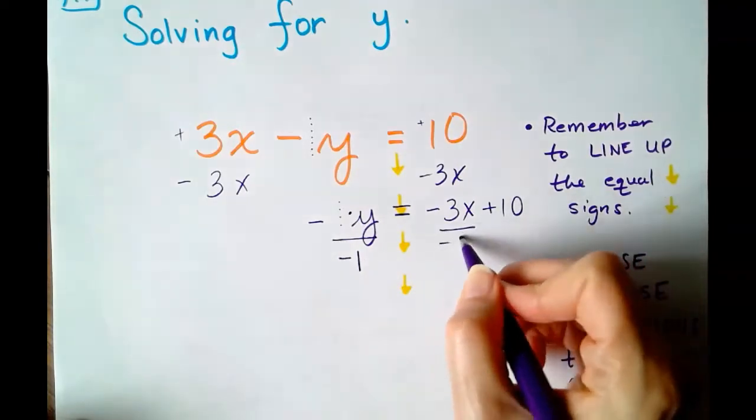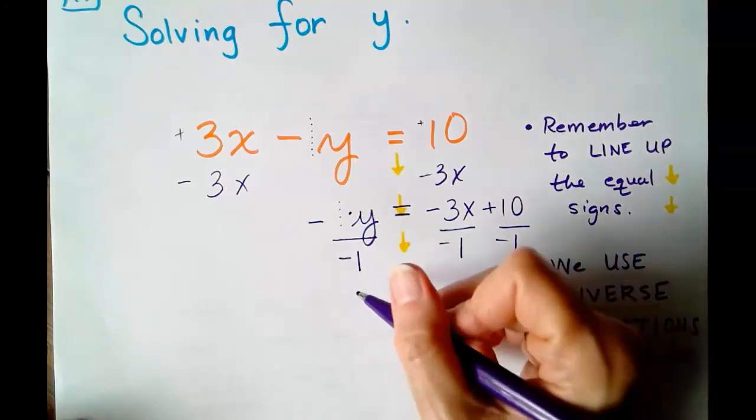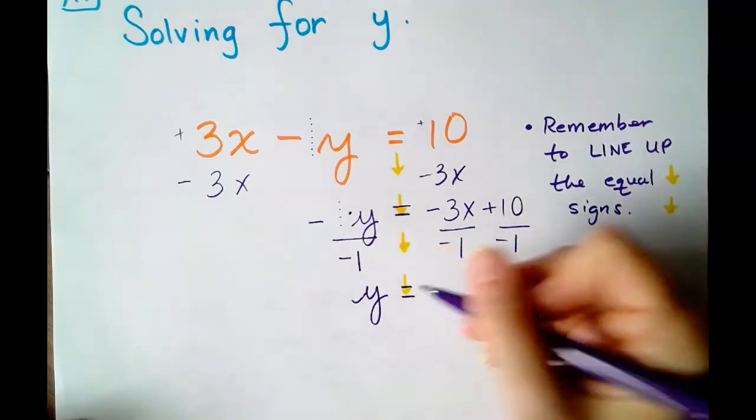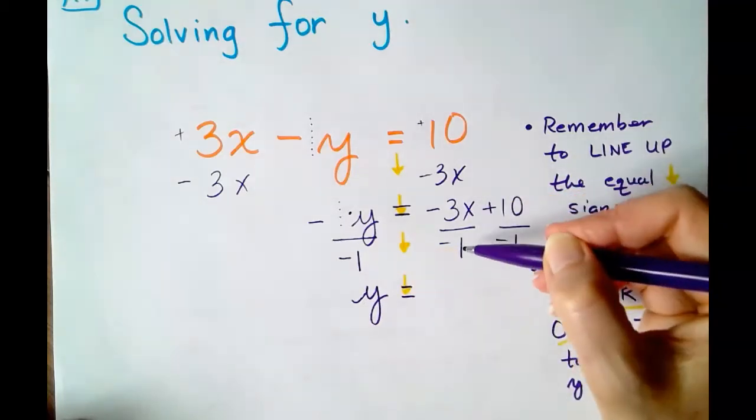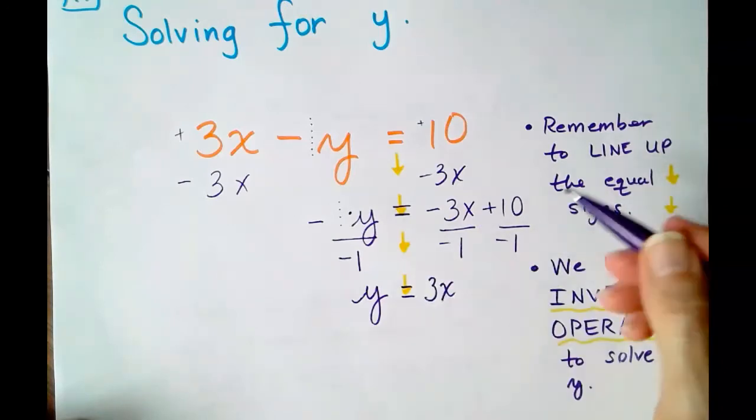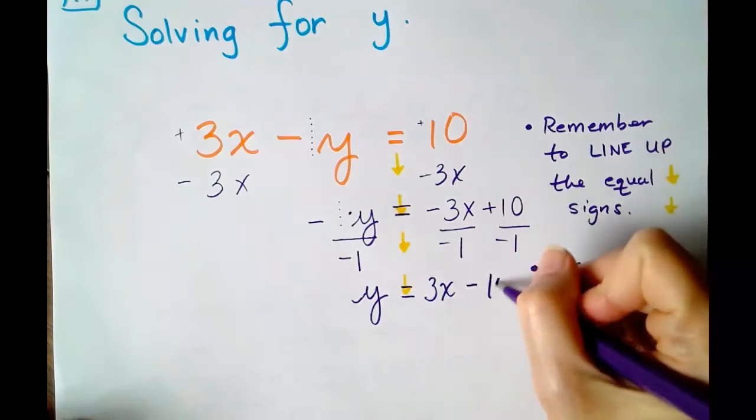And remember, every single term will be divided by negative 1. So this is going to give us Y all by itself. Y equals negative 3 divided by negative 1 is positive 3X, and positive 10 divided by negative 1 is negative 10.